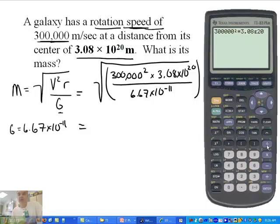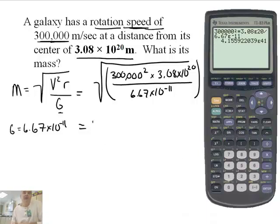3.08 e 20, divided by 6.67 e negative 11. I'm going to get a really big number. This comes out to be 4.2 times 10 to the 41st power.